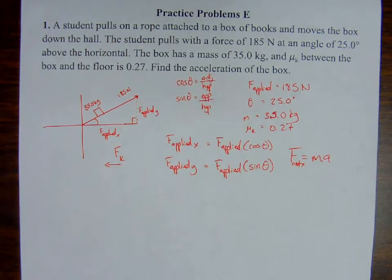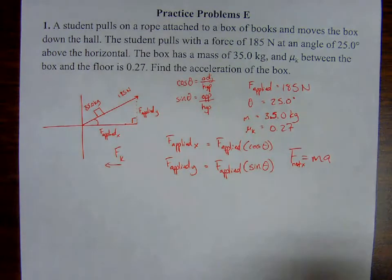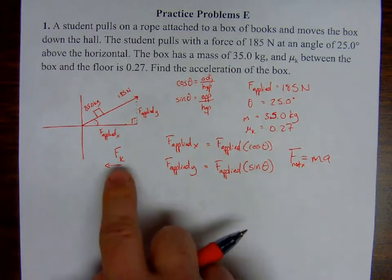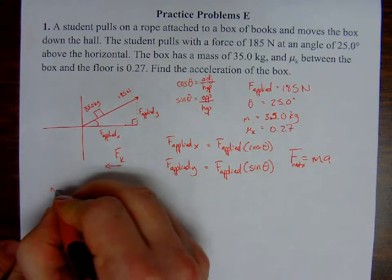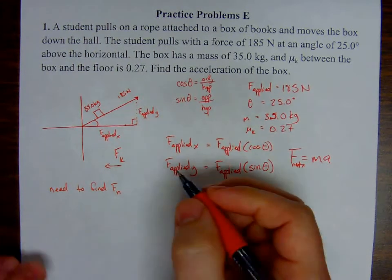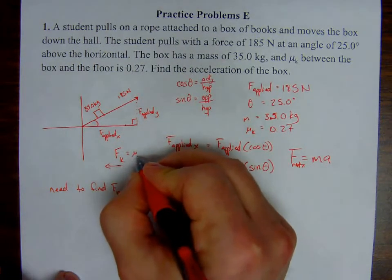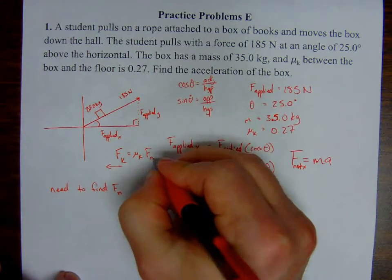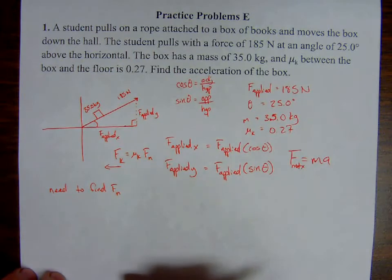Here's the key issue: in order to calculate the force of kinetic friction, I first need to find the normal force. The force of kinetic friction equals the coefficient of kinetic friction multiplied by the normal force. Without the normal force, I can't calculate kinetic friction. To find the normal force, I'll use the force applied in the y-direction and my understanding of equilibrium between the normal force and the y-component of the applied force.